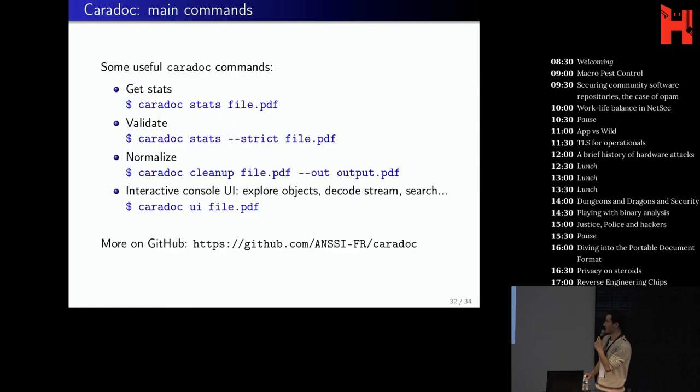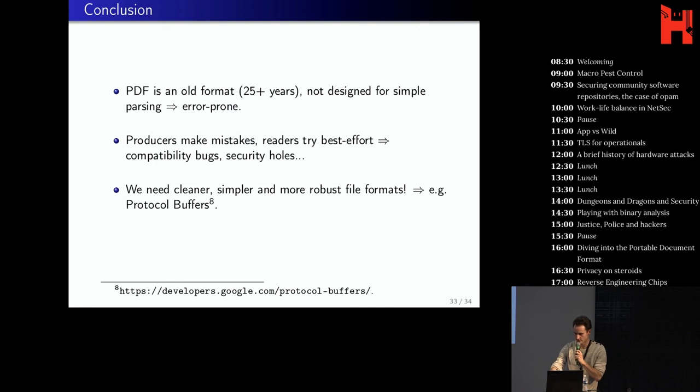So to summarize on Caradoc, here are some useful commands. So you can get some statistics about a file. Then you can validate it with the strict flag. You can normalize it with the cleanup command. And there is a new interactive UI in console. So if you have Linux, I really encourage you to try it. You can explore object, decode stream, search, and so on. So the project is on GitHub. And there is also a Debian package that will come soon.